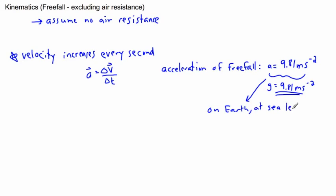This value depends on where you are. On Earth at sea level, the acceleration of freefall is actually caused by gravity. We're going to be talking about the force due to gravity. It turns out that gravity gives us an acceleration.